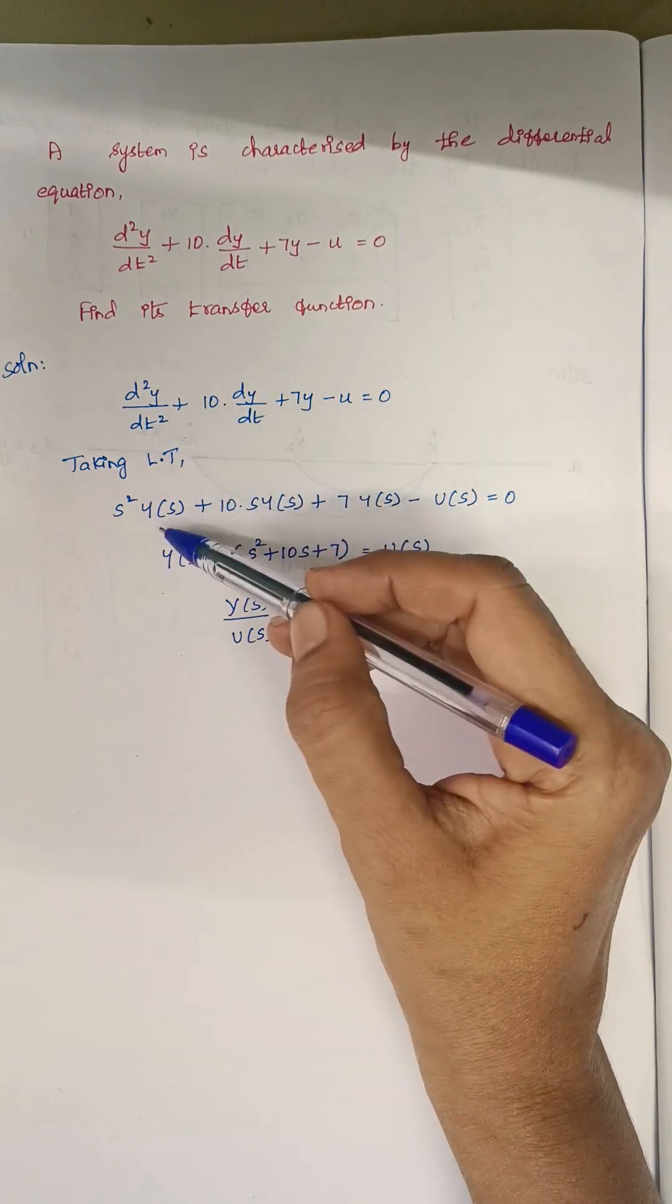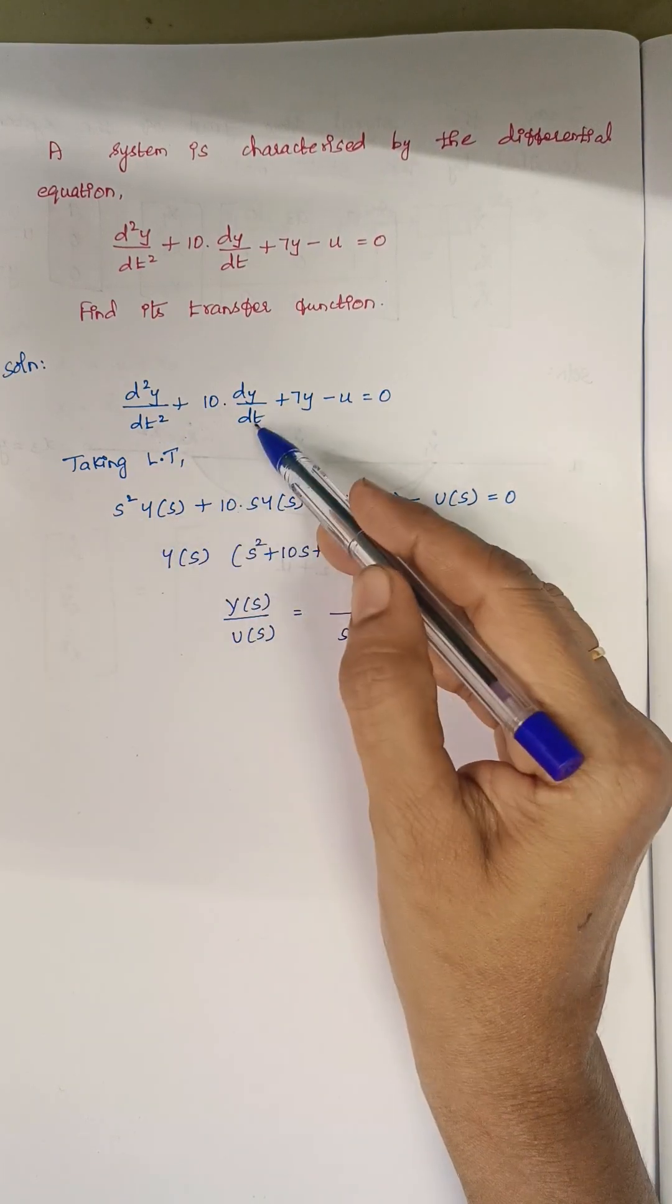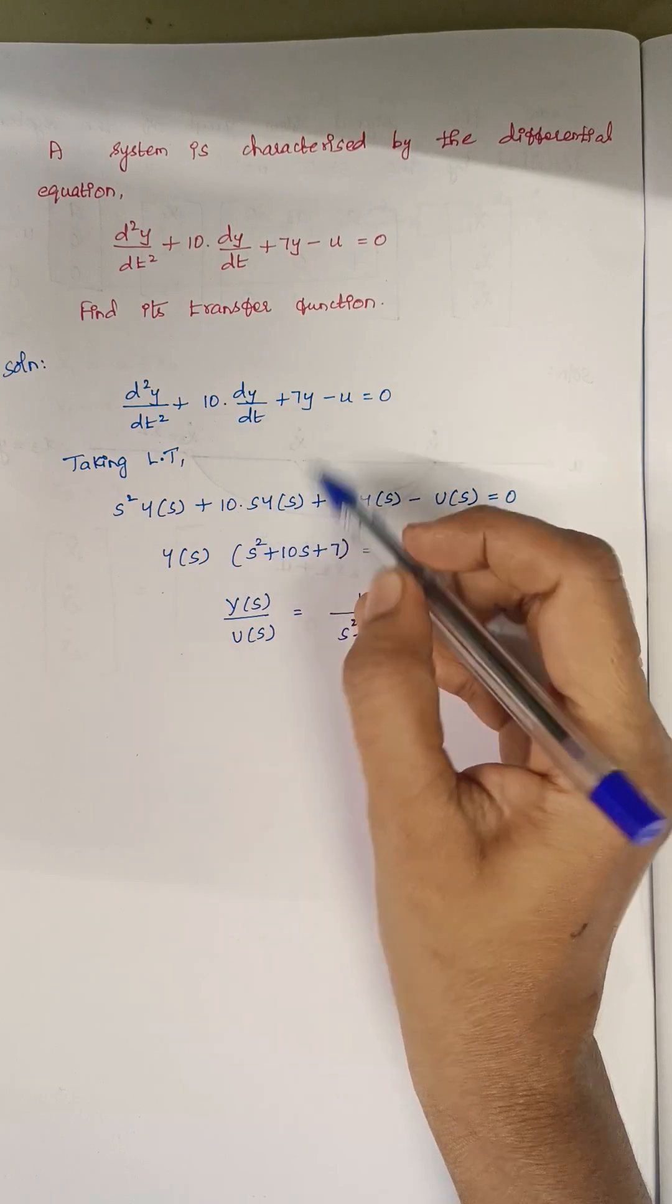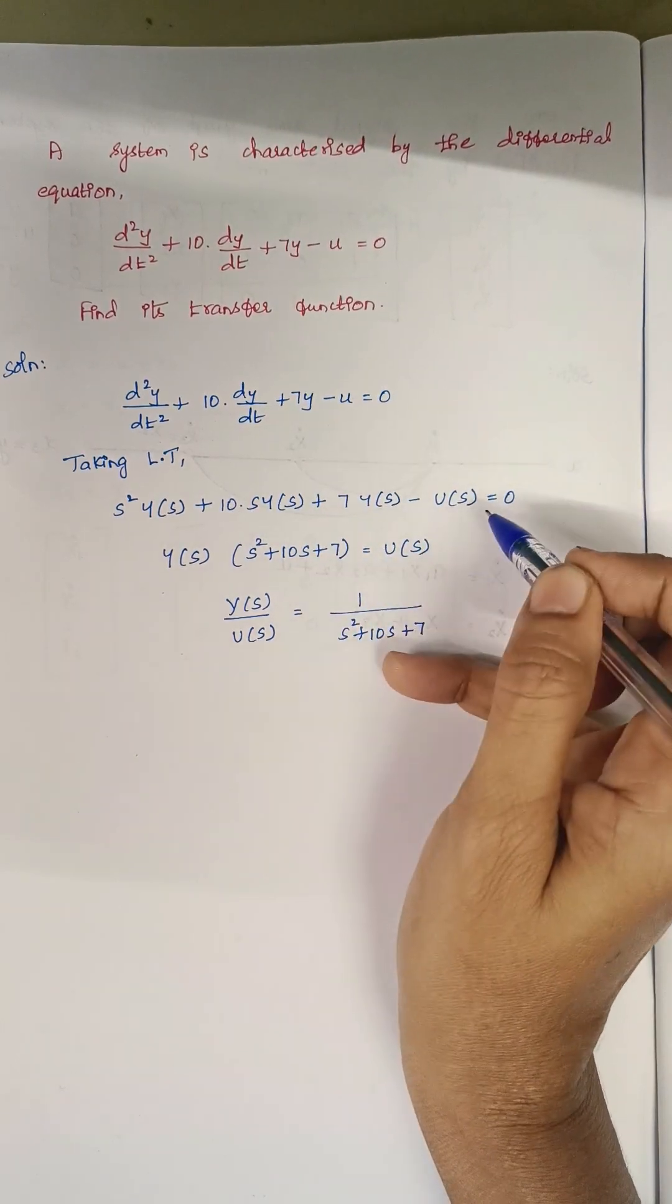So d squared y by dt squared gets modified as s squared into y of s, and here dy by dt becomes s into y of s, and y becomes y of s, and u becomes u of s.